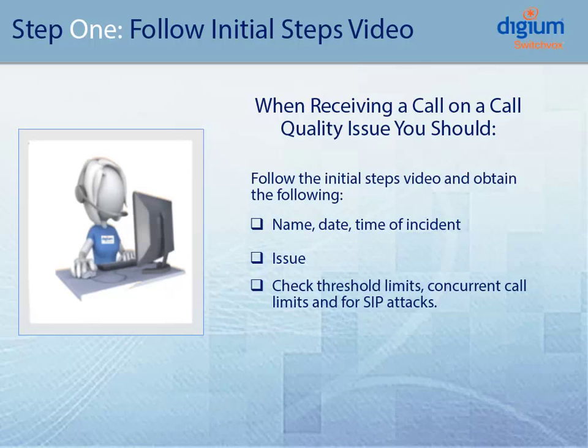When troubleshooting a call quality issue on a PRI inbound line, the first thing you need to do is make sure you have run through your initial steps training video, and have obtained the name of the caller, the date, and the time of the incident, the issue itself, and checked the PBX for threshold limits, concurrent call limits, and whether any SIP attacks are taking place.